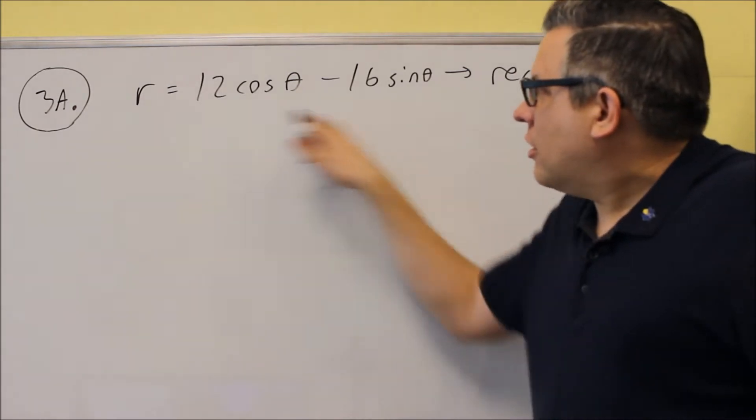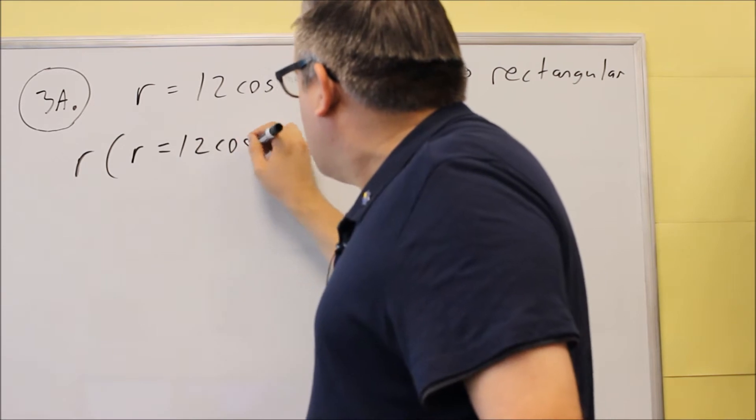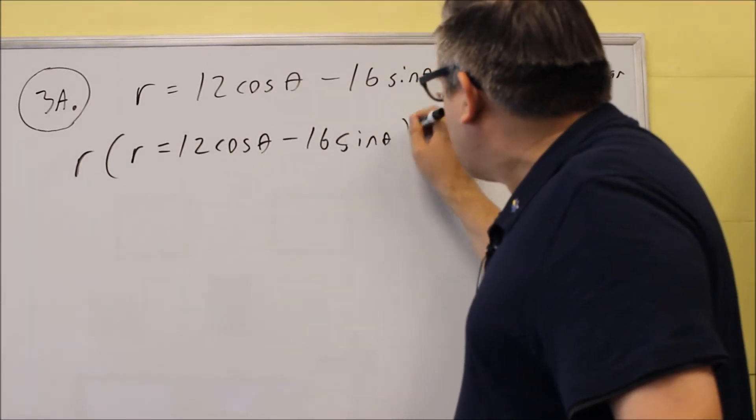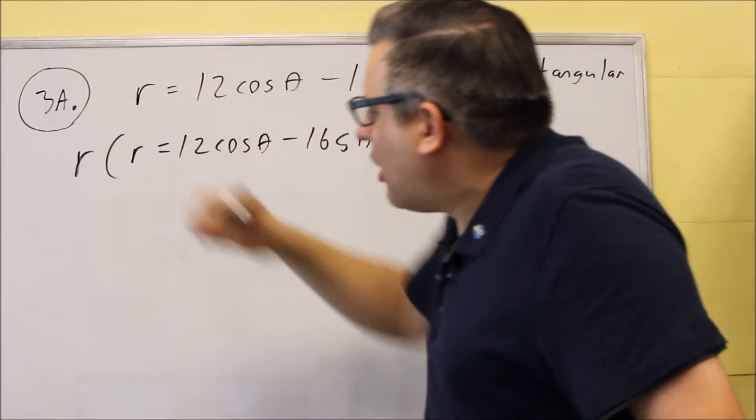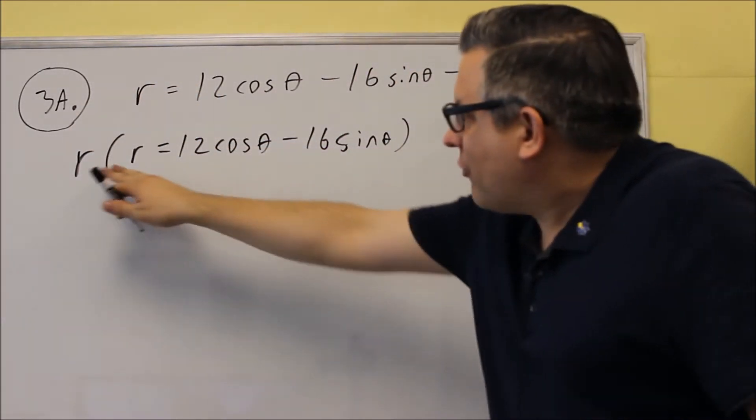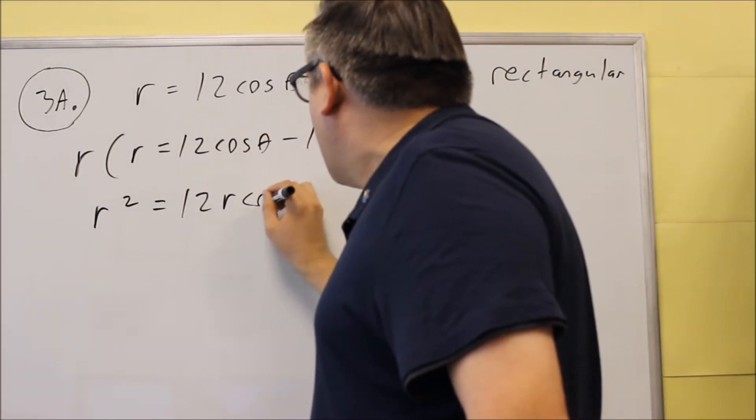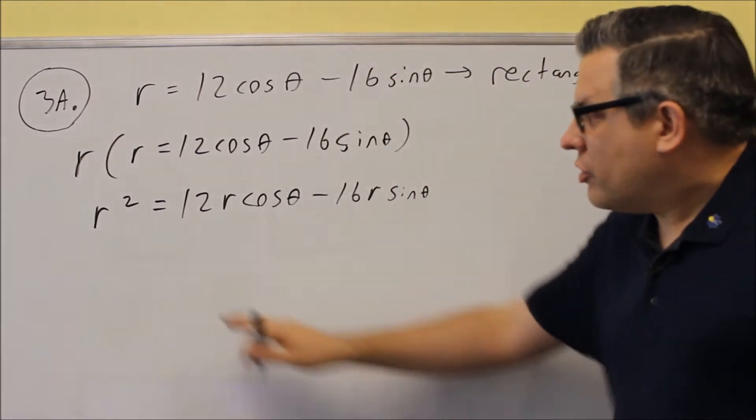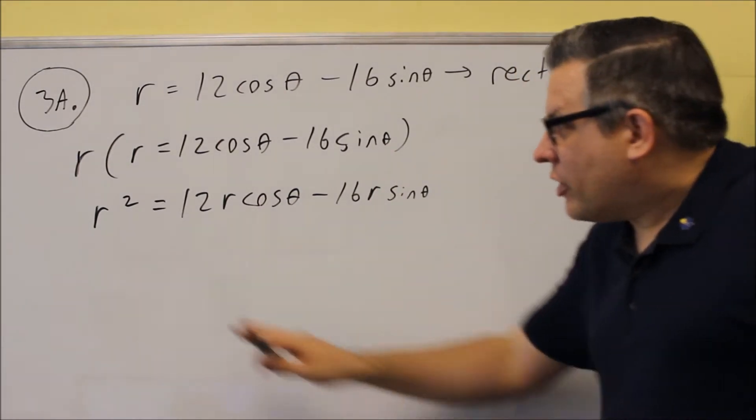So what I recommend here is for the very first step, we're going to take the entire equation, both sides, and we're going to multiply it by r. So we're multiplying the outside by r. That way it converts everything all over and we get r squared equals 12r cosine theta minus 16r sine theta. So we're going to do r times everything that you see inside the parentheses.